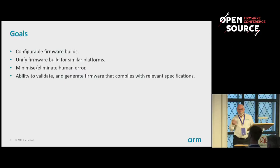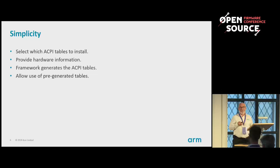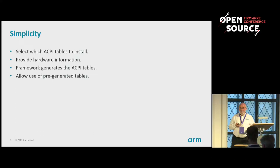Eliminate the bugs you get when you copy, paste, and forget to edit a number, and just be able to validate that it works. For simplicity, we wanted to say which ACPI tables we cared about, provide the hardware information necessary for those tables and nothing else. Generate the tables and, as an option, allow normal built tables to be used. In particular, we found you can generate a table through the framework and then feed the binary back in as a raw binary, which was an optimisation.